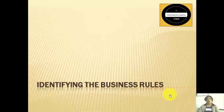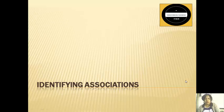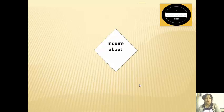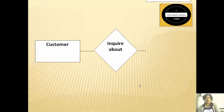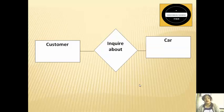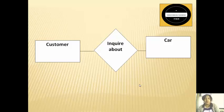Next we have to define the relationships. For relationships it is very necessary to identify the cardinality between the entities, and hence we are identifying the business rules between pairs of entities. The first association is an 'enquire about' association between the customer and the car. A customer can enquire about multiple cars, and the same car can be enquired by multiple customers, so the cardinality here is many to many.